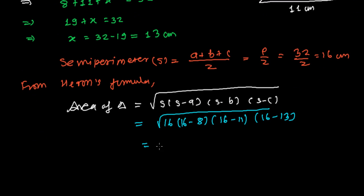Let's go further. It's 16 times 16 minus 8, that's 8; 16 minus 11, so 6 minus 1, that's 5; and then 16 minus 13, that's 3.